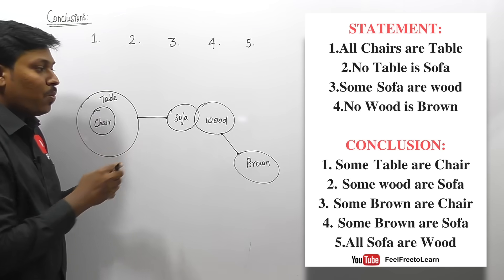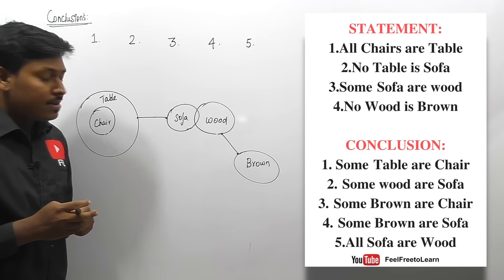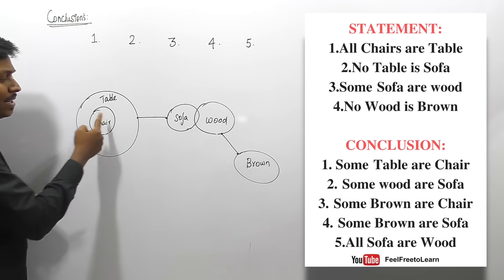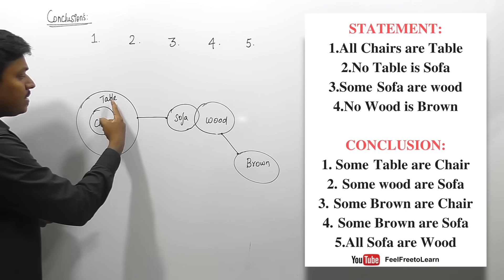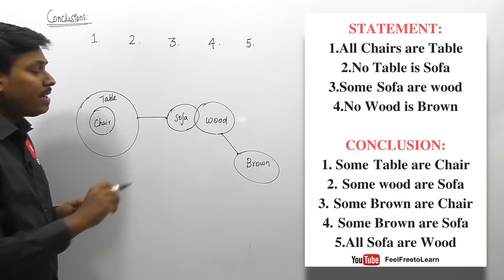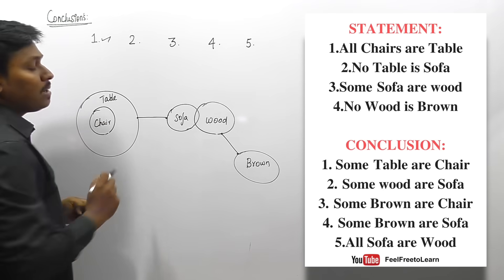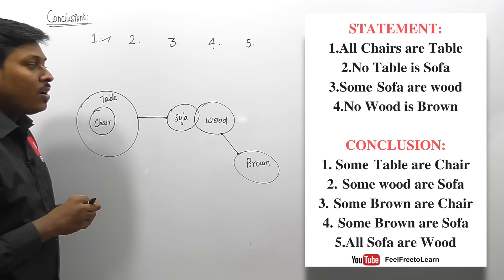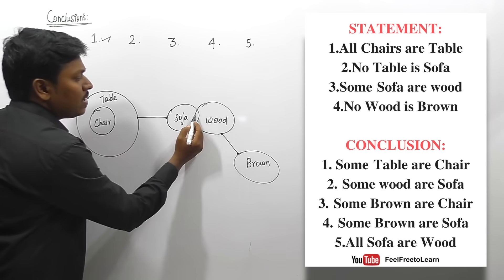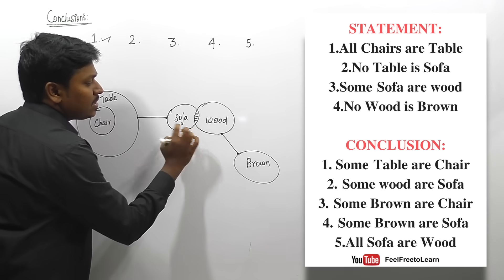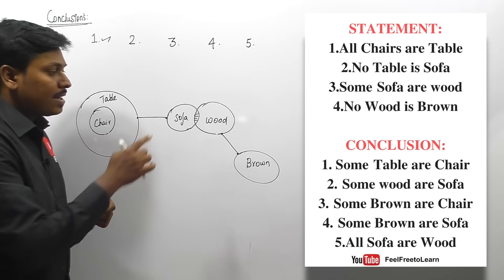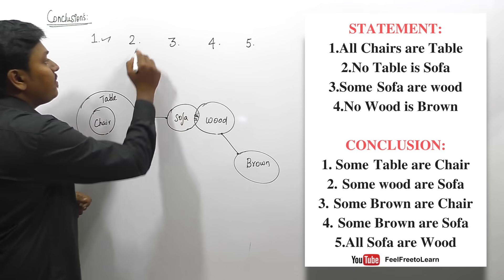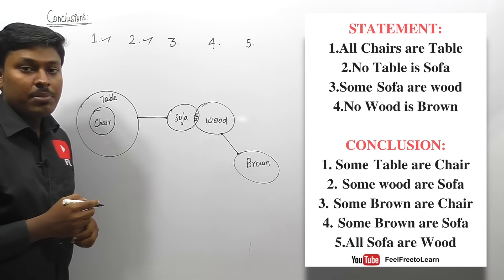Conclusion one: 'Some tables are chair'. Table and chair are connected — this is exactly correct, so conclusion one is true. Conclusion two: 'Some wood are sofa'. Sofa is connected with wood in this region, so conclusion two is true.